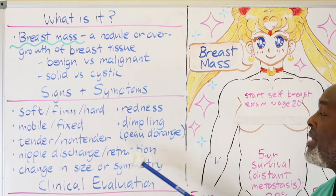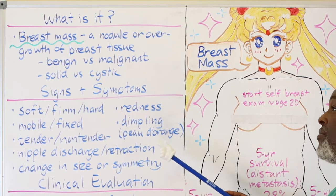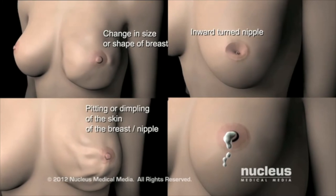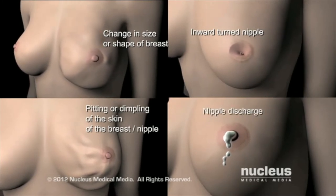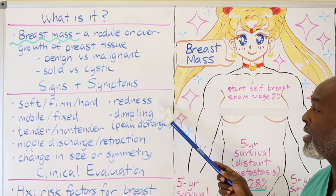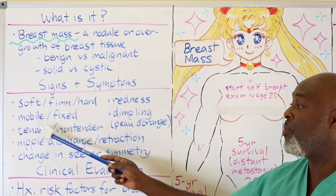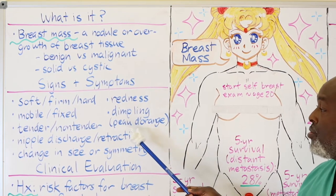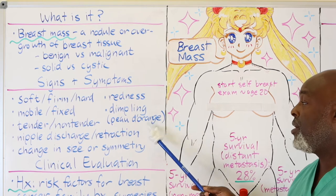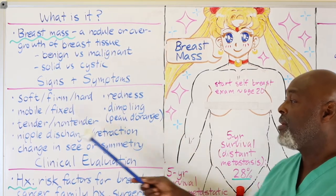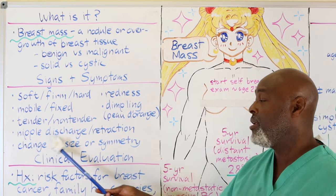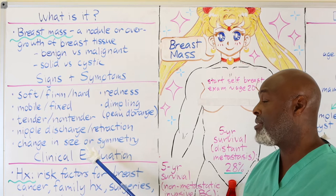From a patient standpoint, you're looking at whether the mass looks, feels, or behaves a certain way — soft versus firm versus hard. That gives us an idea whether it's a fibroadenoma, dense breast tissue, or cancer. Redness may indicate infection or possibly inflammatory breast cancer. Mobile versus fixed: fixed suggests cancer, mobile suggests fibroadenoma. Dimpling such as peau d'orange is essentially breast cancer involving the skin, which we treat with chemotherapy first before surgery. Tender versus non-tender: a tender mass suggests a growing cyst or abscess. Nipple discharge versus retraction — bloody discharge raises concern for cancer.